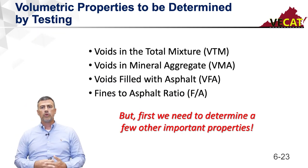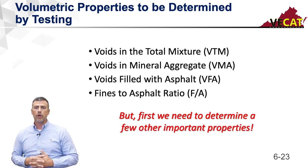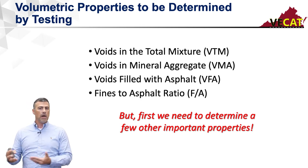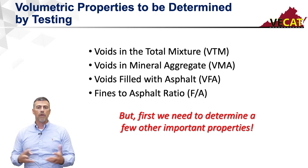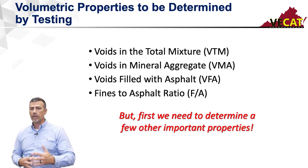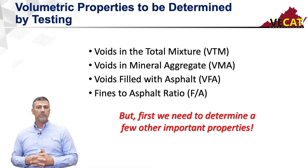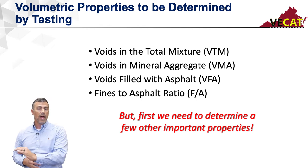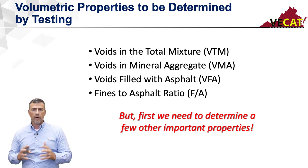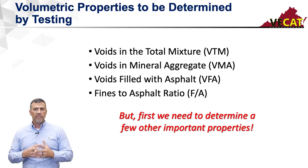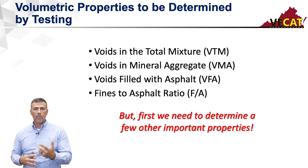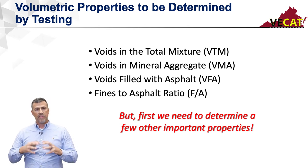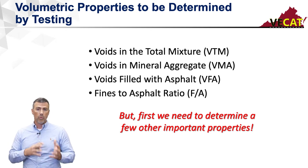Some of the terms we're going to be calculating — the volumetric terms specified by our specifications. The first one, voids in the total mix, VTM — this is also what everybody refers to as air voids. VMA, voids in the mineral aggregate or in the aggregate skeleton with no asphalt. And then the third, the voids filled with asphalt, VFA — essentially how much of the VMA did we fill up with asphalt.